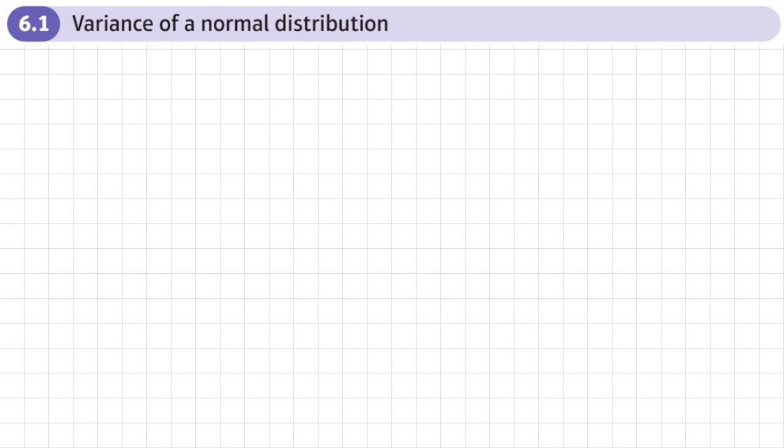This is the first section, Chapter 6, Further Hypothesis Test, and in this section we're going to be looking at the variance of a normal distribution.